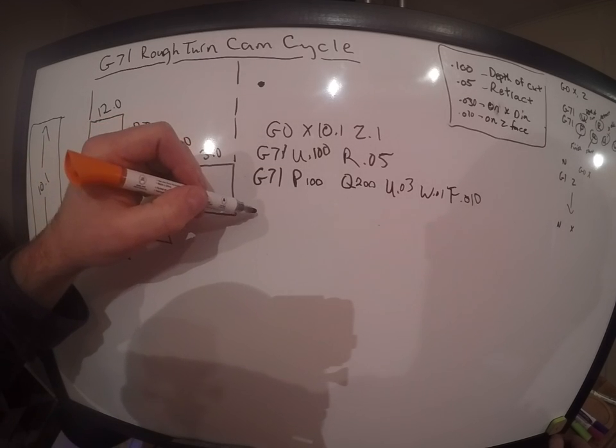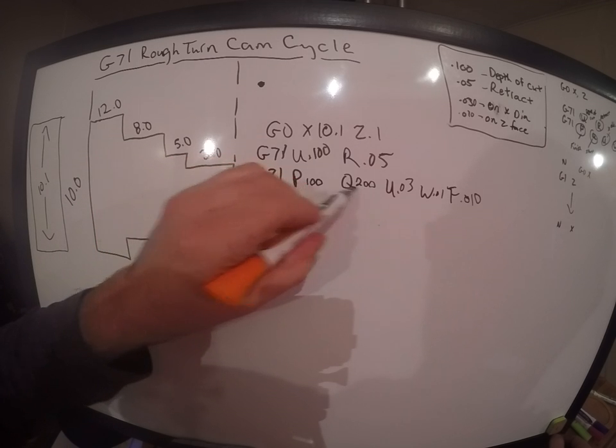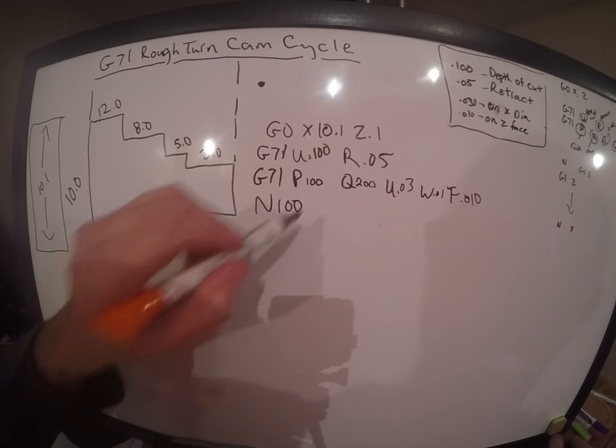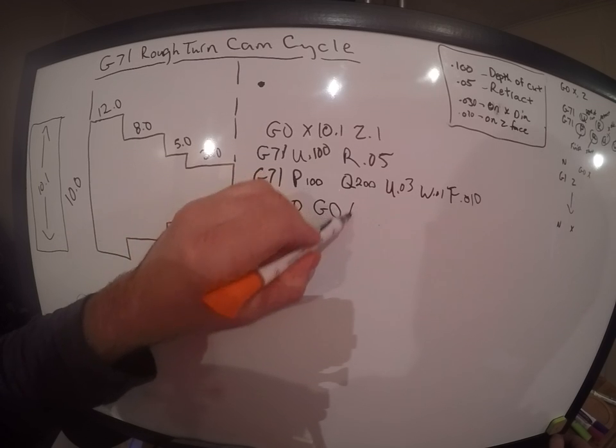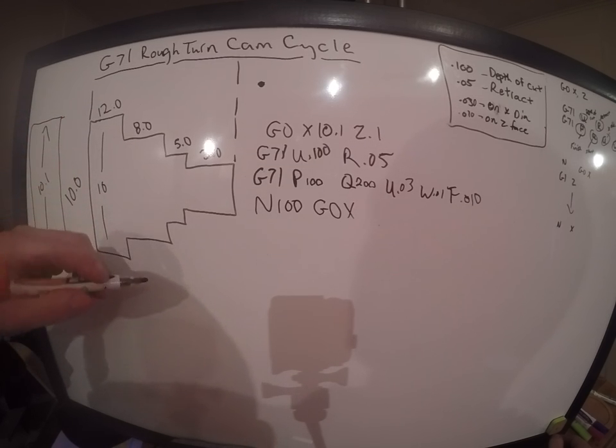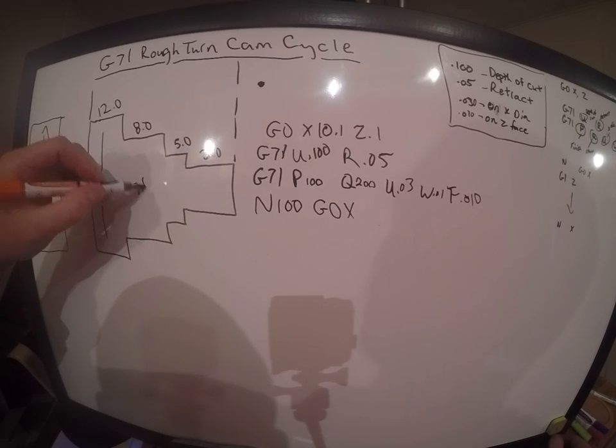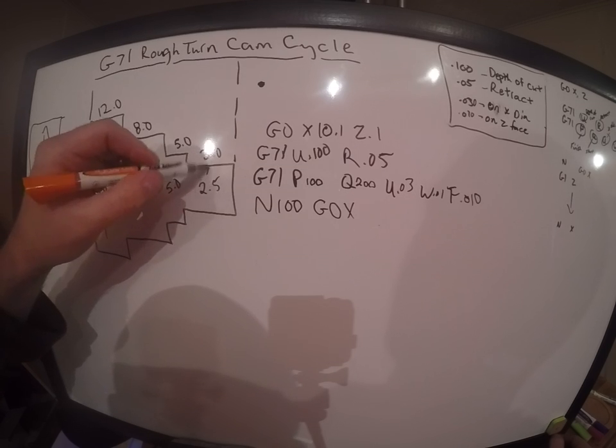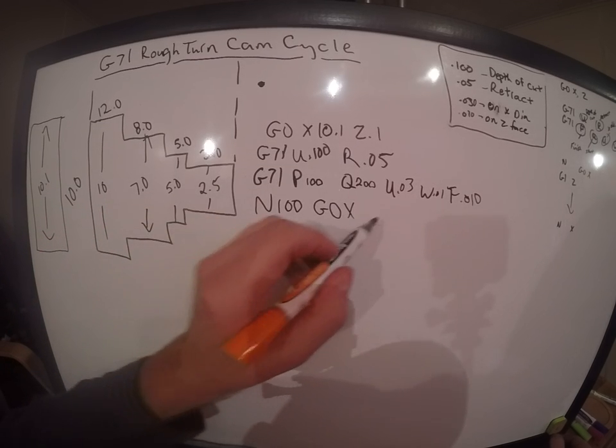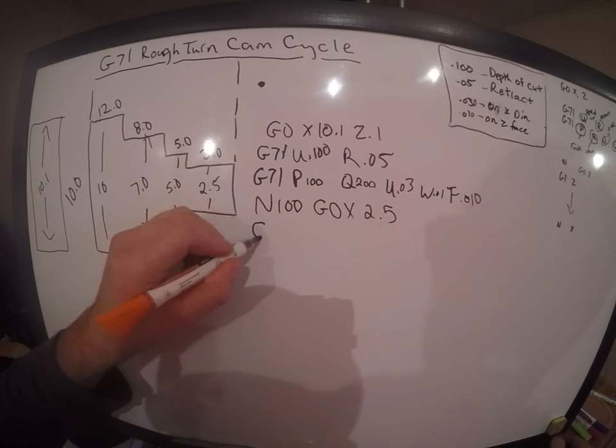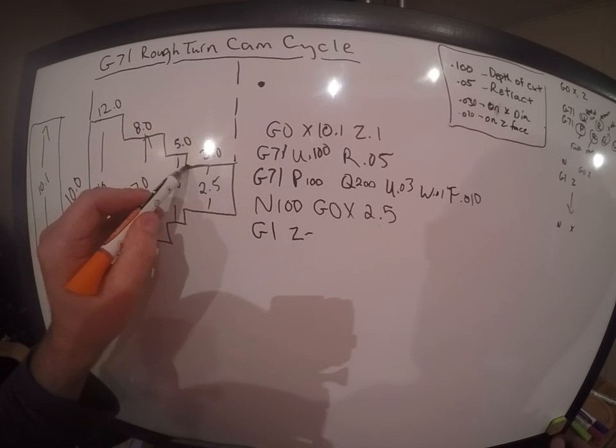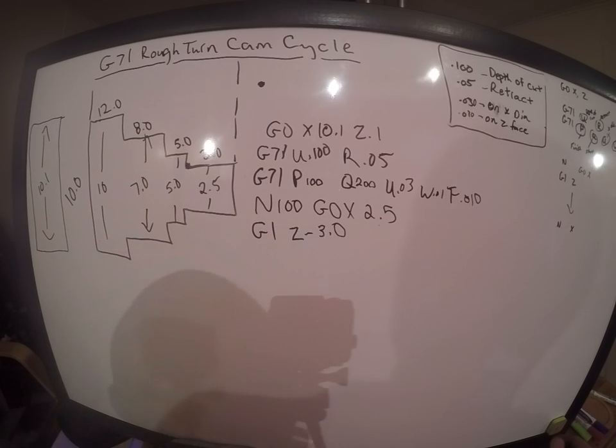There we have it. Now we're ready. So we're going to start with N, and N is going to be in between these two numbers here. Our first one will be the P, so we're going to say N100. And now we're going to go G0 X to the smallest diameter, which is, let's write this out here: 10, 7, 5, 2.5. Okay, so 2.5 inches, X would be our smallest diameter. So X 2.5, and then we're going to go G1 Z negative 3 inch, so negative 3.0. There we have it, now we're here.